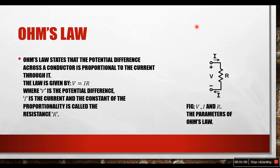Now that we know about Ohm, let's talk about the basic expression of Ohm's law. Ohm's law states that the potential difference across a conductor is proportional to the current through it. The law can be expressed as V equals I into R, where V is the potential difference, I is the current flowing through the conductor, and the constant of the proportionality is called the resistance R. In the following figure we can see V, I and R, the parameters of Ohm's law.